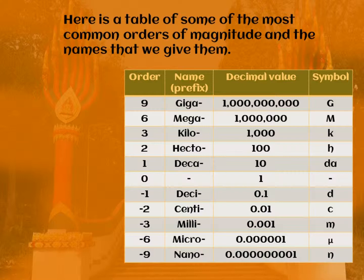Going down: 0.1 metres is one decimetre. 0.01 metres is one centimetre — that's minus two orders. Minus three orders is a millimetre, which we talked about before. Minus six orders is a micrometre, which uses the symbol of the Greek letter mu — like a U but with a little tail at the front as well as the end. And minus nine orders of magnitude is nano, so that would be one nanometre of length.